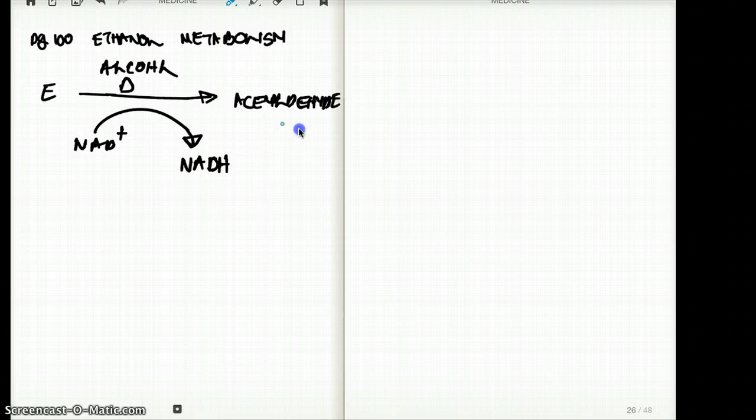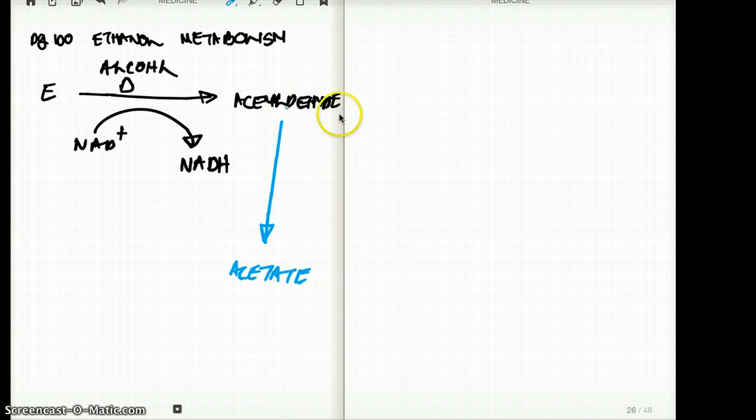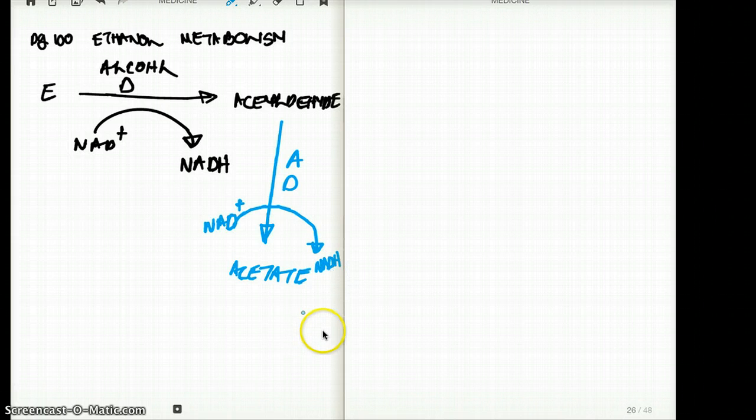Then from acetaldehyde, we are making acetate. Acetaldehyde is further broken down to acetate and the enzyme here is acetaldehyde dehydrogenase because we are dehydrogenating our acetaldehyde to make acetate. Here also, we are using one molecule of NAD plus to NADH, so we are reducing the NAD pluses to NADH.